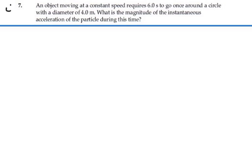Here's problem four, seven. An object moving at a constant speed requires six seconds to go around a circle with a diameter of four meters. What is the magnitude of the instantaneous acceleration of the particle during this time?